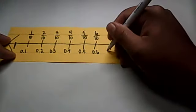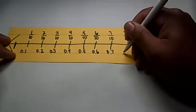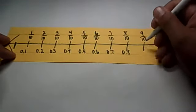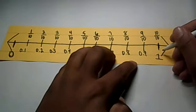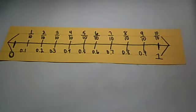Zero and seven tenths, zero and eight tenths, zero and nine tenths, and this will be zero and ten tenths which makes one whole.